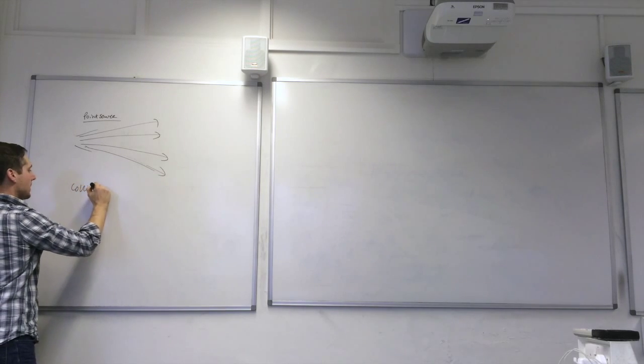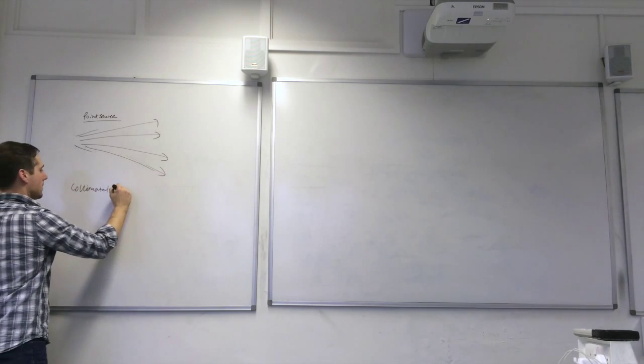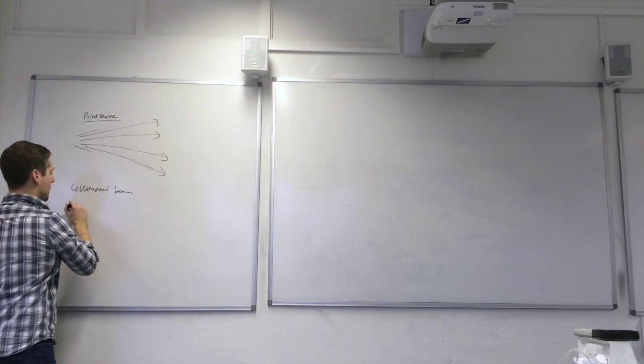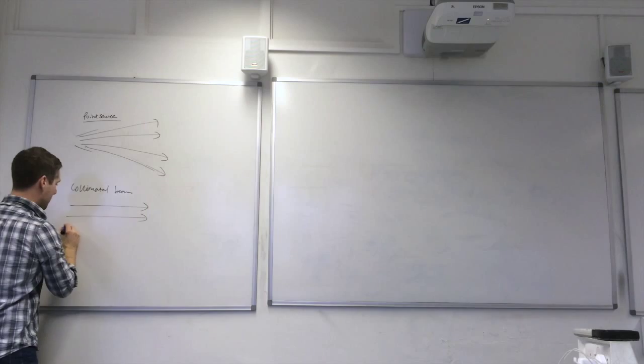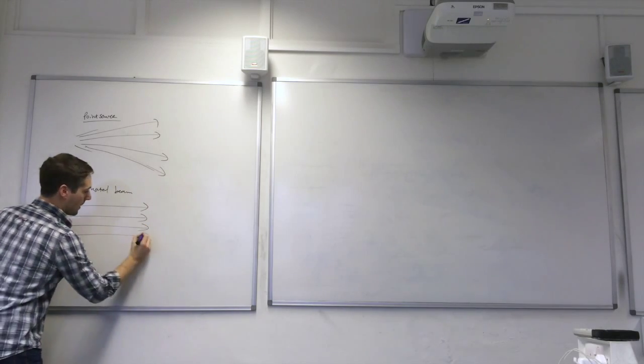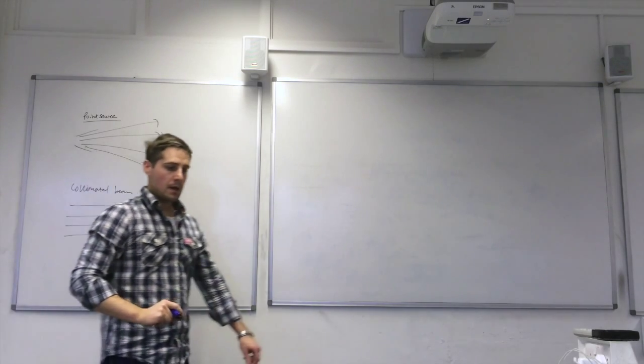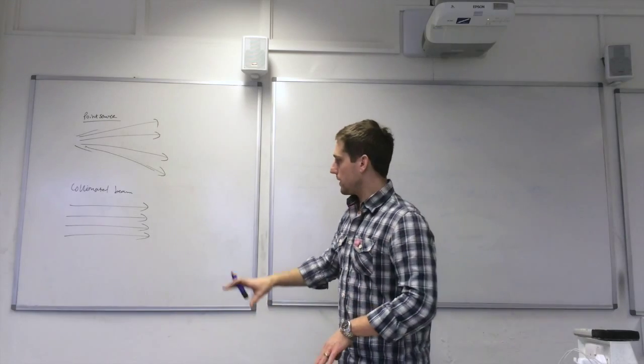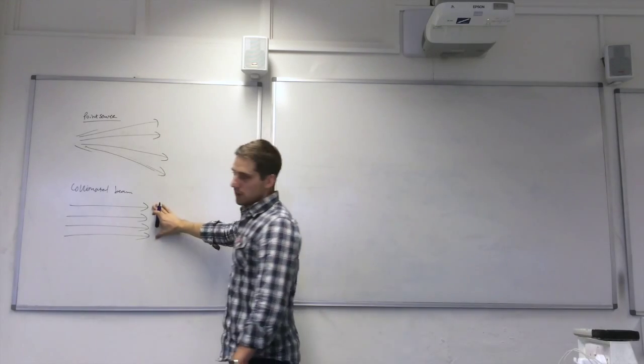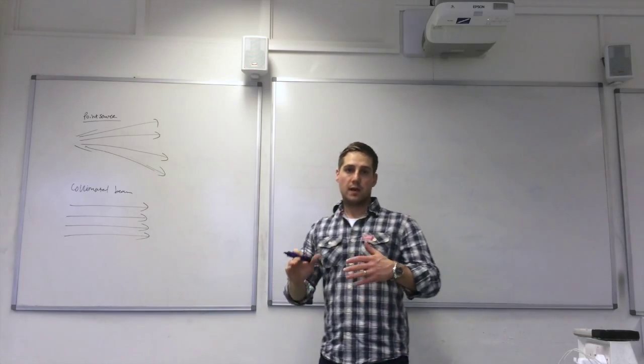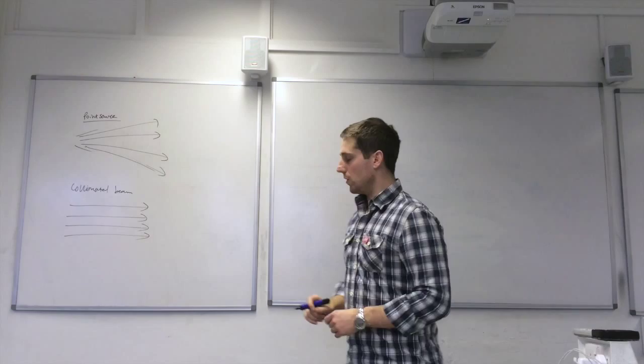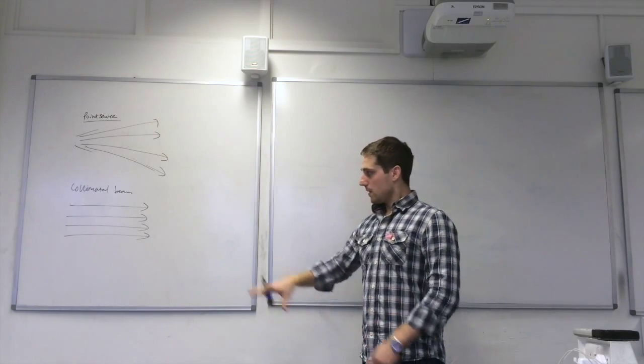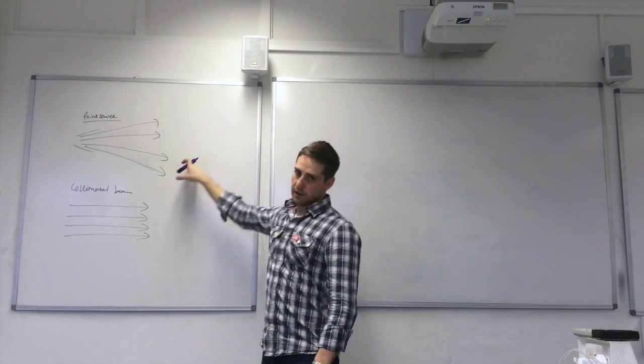With a collimated beam here, our X-rays are all parallel to each other. And we're interested in how the intensity of the collimated beam is affected by the depth of material that we're looking at. So that's what we'll be looking at.